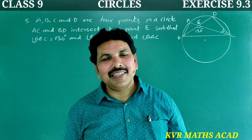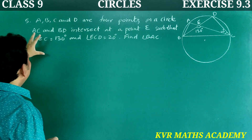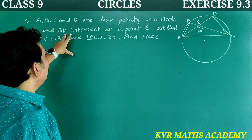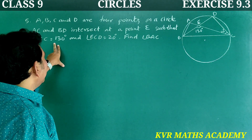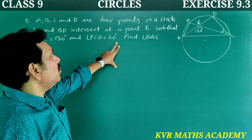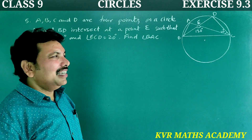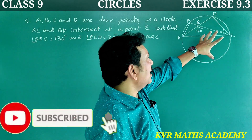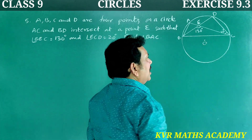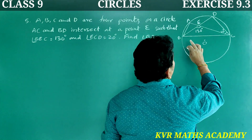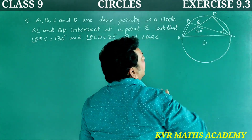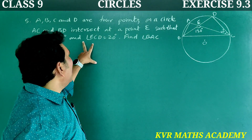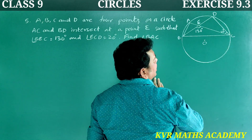This is the fifth question: A, B, C, and D are four points on a circle. AC and BD intersect at a point E such that angle BEC is equal to 130 degrees and angle ECD is equal to 20 degrees. Find angle BAC.